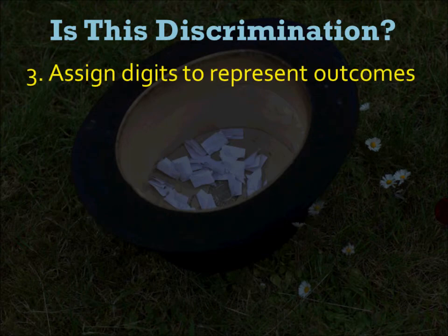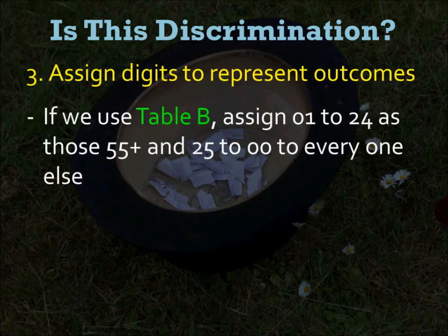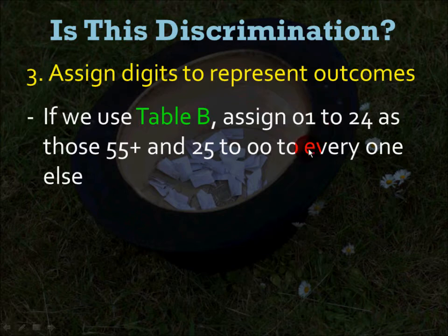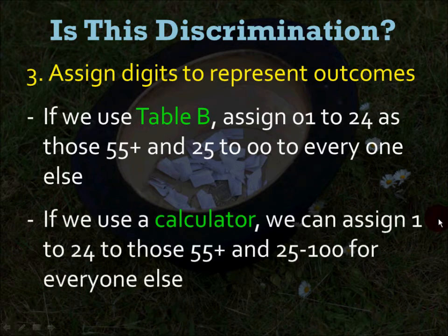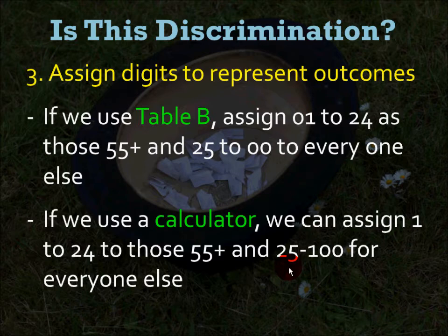The third step is to assign digits to represent outcomes. Since 24% of the workforce is over 55, you're going to use table B and assign 01 to 24 as a simulation of those that are 55 and over. The remaining digit pairs, 25 to 00, represent everyone else — a 24% chance of selecting someone 55 and over and a 76% chance of selecting somebody else. If you use your calculator, assign digits 1 to 24 to those that are older and 25 to 100 for everyone else.